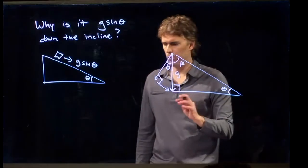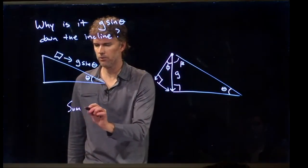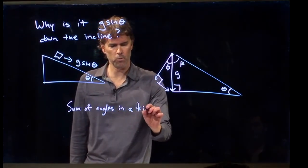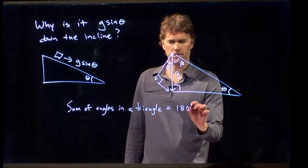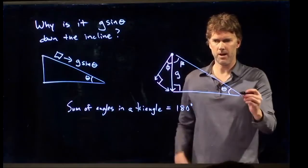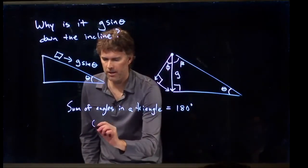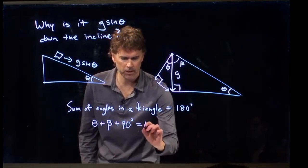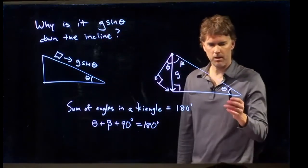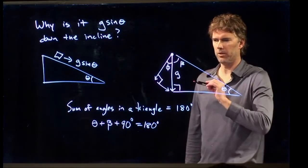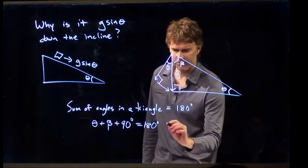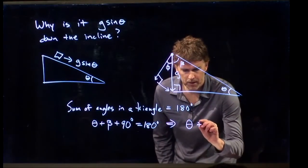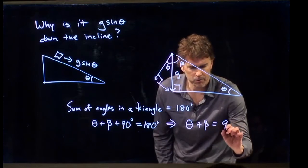Alright, so we know that the sum of angles in a triangle equals 180 degrees. So let's take a look at this triangle right here. I have theta plus beta plus 90 degrees equals 180 degrees. If I move that 90 over to the other side, I get theta plus beta equals 90 degrees.